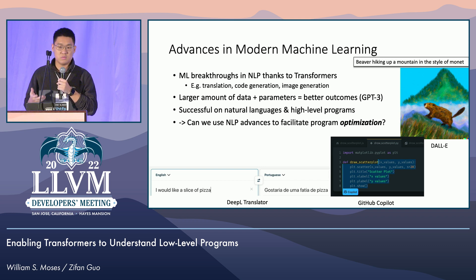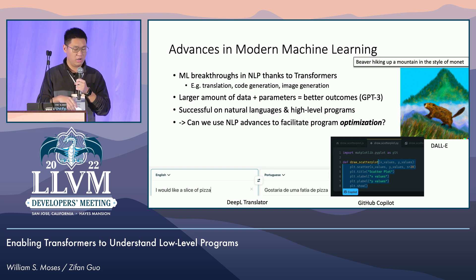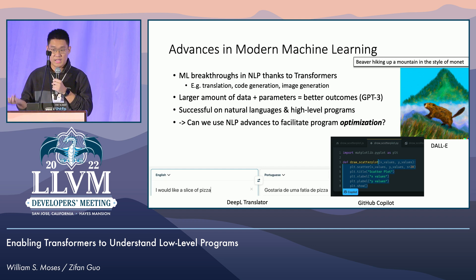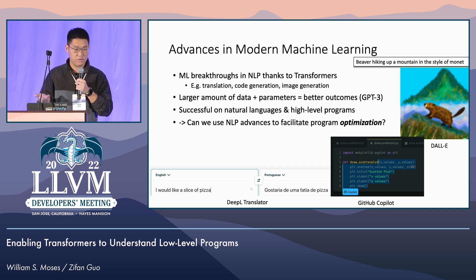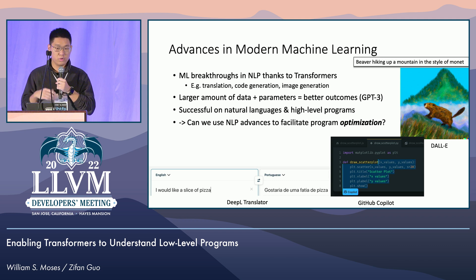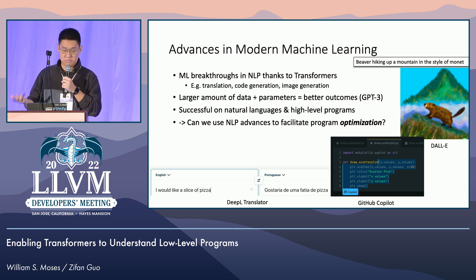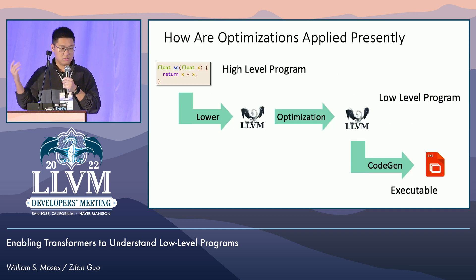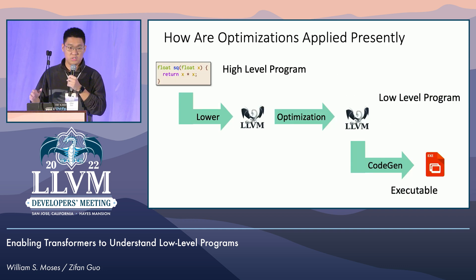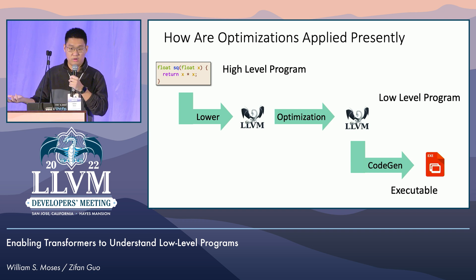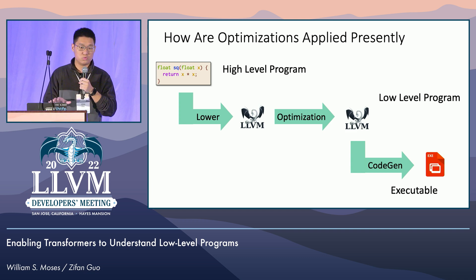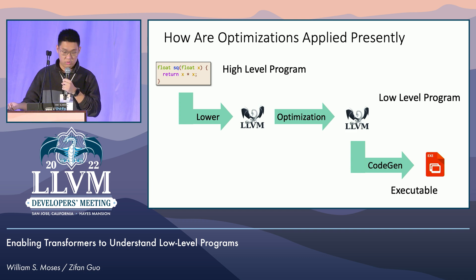This model has been very successful on natural languages and high-level programs like C, Java, Python, et cetera. We were thinking about whether we can use these models in order to facilitate optimization. And optimizations are obviously not on the high level — they're on the low level with intermediate representation. So that's why we need to use transformers on LLVM.